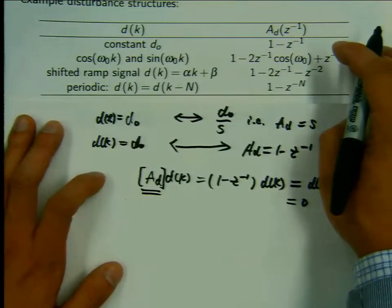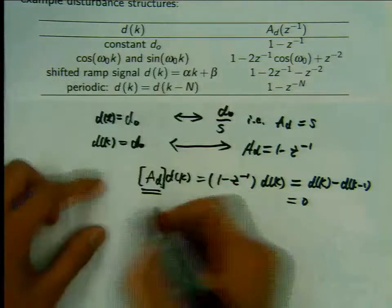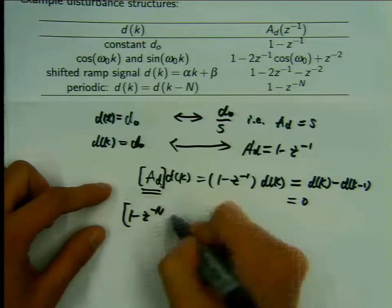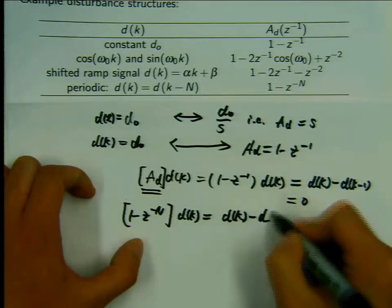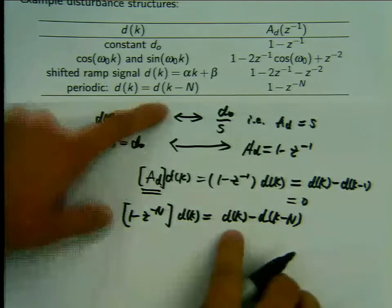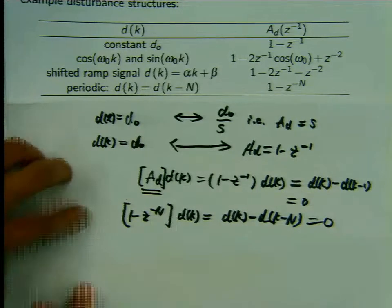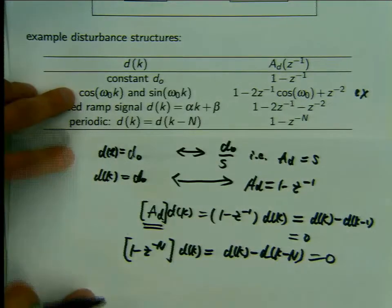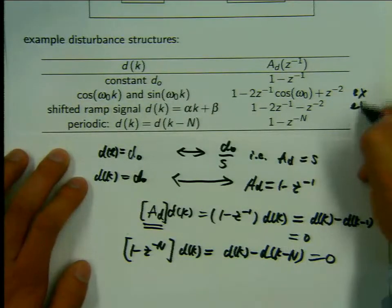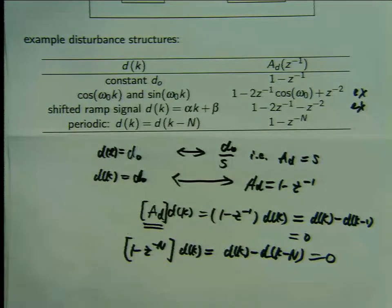Let me do the periodic example. A_D = 1 - z^(-N), and if the disturbance is periodic, then (1 - z^(-N)) * d(k) = d(k) - d(k - N). If d(k) is periodic with period N, then d(k) = d(k - N), so this gives zero. I'd suggest doing an exercise to show the sinusoidal and ramp signal cases as well.